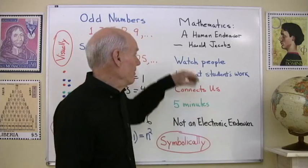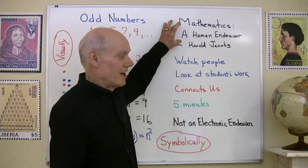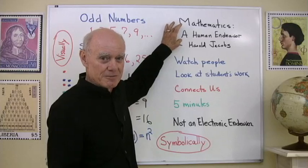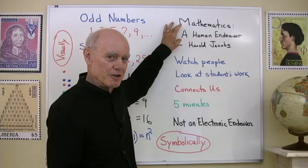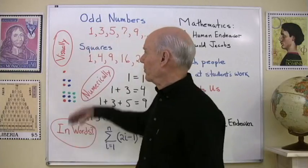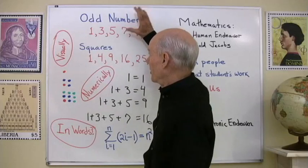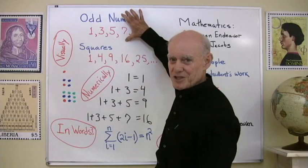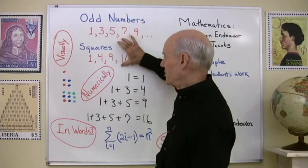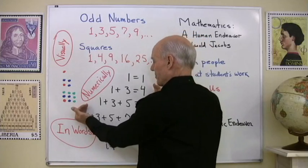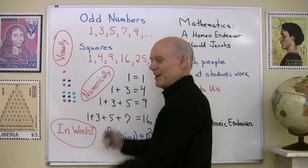A little follow-up to our video on mathematics being a human endeavor — mathematics being something that human beings do. We used as our example the relationship between the sequence of odd numbers and the sequence of squares, given right here.